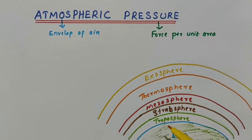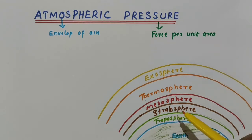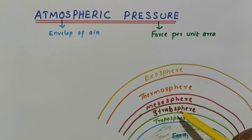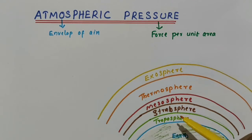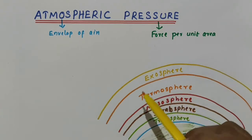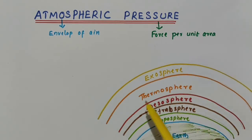The pressure exerted by the air is known as atmospheric pressure, or we can say that the atmospheric pressure is the pressure exerted due to the weight of the air present in the atmosphere. Our atmosphere has different layers, that is, different layers of gases.